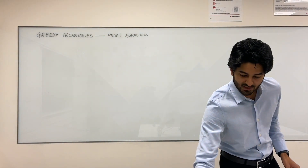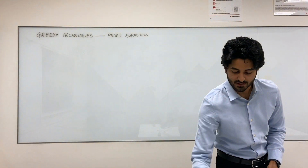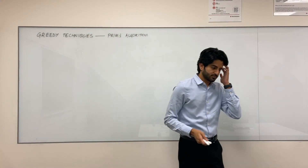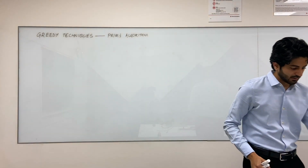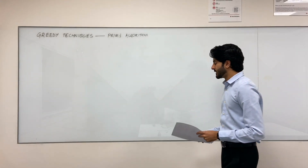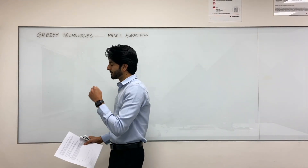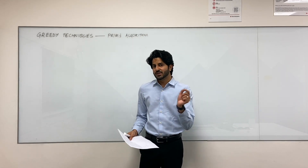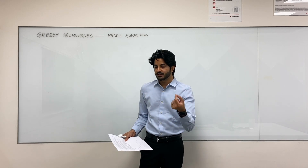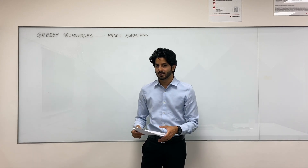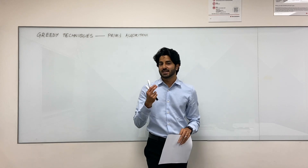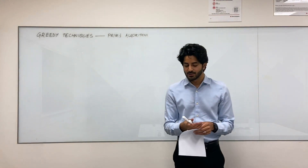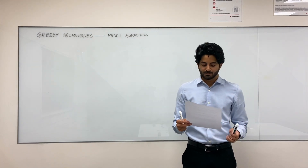Before we set out to prove Prim's algorithm, let's think about what it tries to do. Prim's algorithm tries to generate a minimum spanning tree at the end through a sequence of expanding subtrees. The individual subtrees in that sequence themselves become subgraphs of the minimum spanning tree — you can call them subtrees.